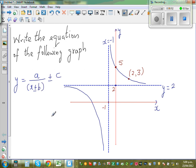This is the general form of the hyperbola. So here by looking at the vertical asymptote, let me write some facts. So your vertical asymptote is x is equal to negative 1.